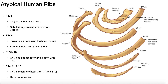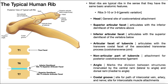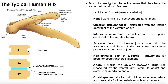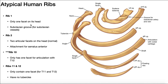What makes rib 1 atypical? First, it only has one facet on its head — it doesn't need a superior articular facet and inferior articular facet because it does not articulate with demi-facets. It articulates with a full or true facet located entirely on the T1 vertebra, so it only has a single facet. The atypical ribs that articulate with a full or true facet are not going to have separate articular facets — it's one larger facet on that rib's head.